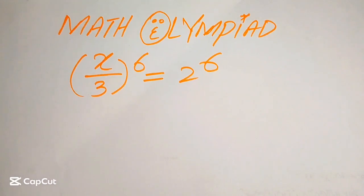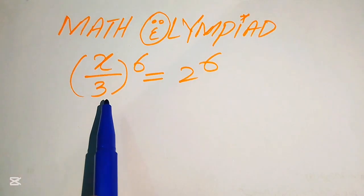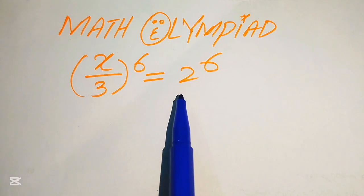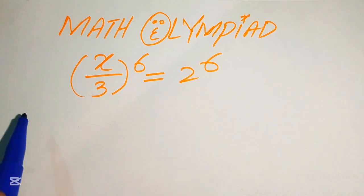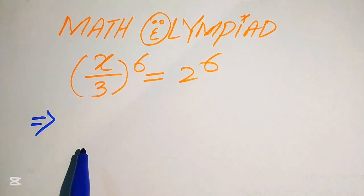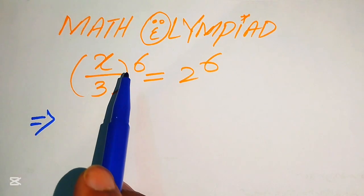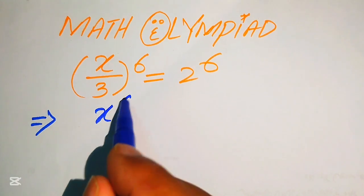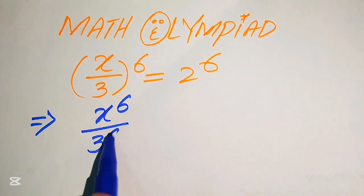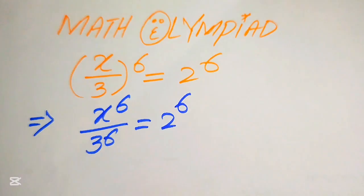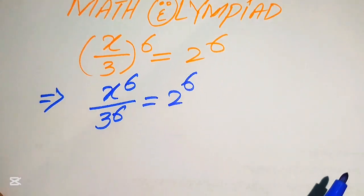Hello everyone, welcome to solve this nice math algebra problem. Here we have (x/3) to the power of 6 equals 2 to the power of 6. First, we break this exponent — it will be written as x to the power of 6 divided by 3 to the power of 6, and this equals 2 to the power of 6.